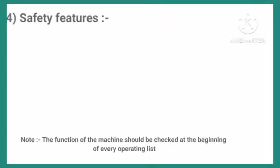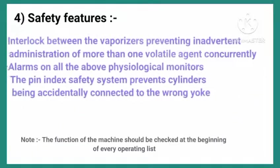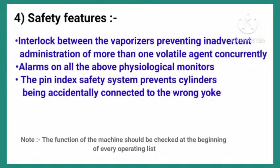And finally, the safety features. There is an interlock between the vaporizers, preventing inadvertent administration of more than one volatile agent concurrently. Alarms on all physiological monitors. The pin index safety system prevents cylinders from being accidentally connected to the wrong yoke. That's all about the anesthesia machine — thanks for watching.